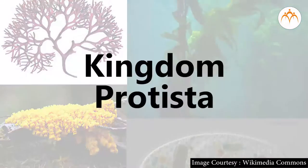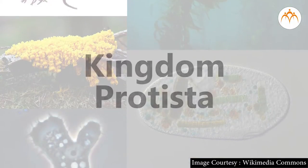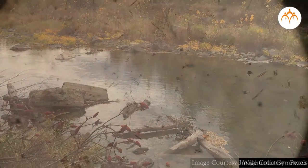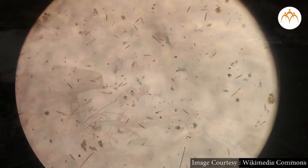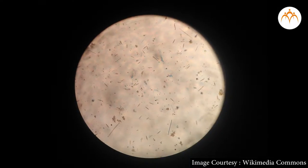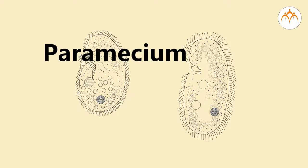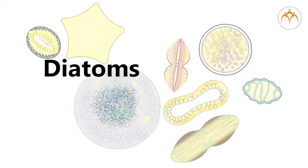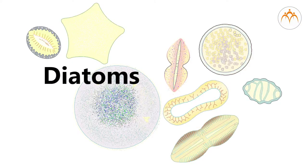Kingdom Protista — many members of this group are found in water. In just one drop of pond water, you will observe a large number of protists like Amoeba, Paramecium, Euglena, diatoms, and others. Now I will tell you about the importance of some members from this group.